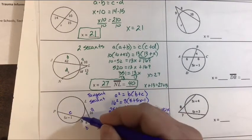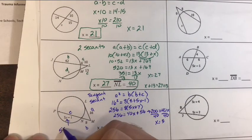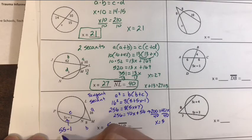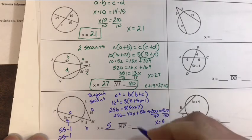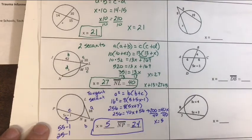Now to find the value of NP, not the full thing, just NP. We're going to go here and we're going to do 5 times 5 minus 1 or 25 minus 1. That's 24.